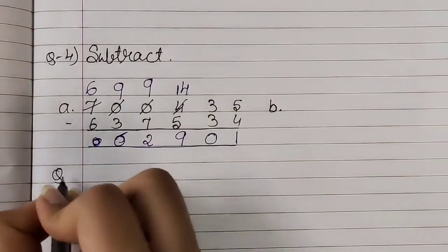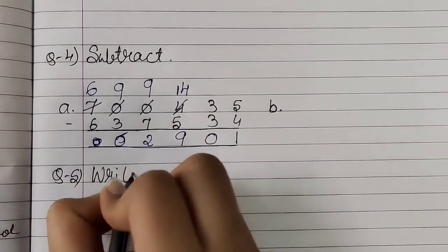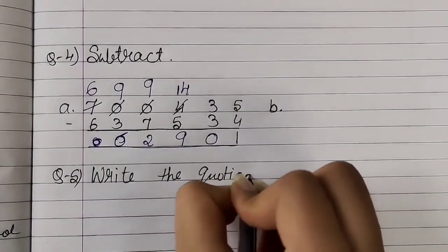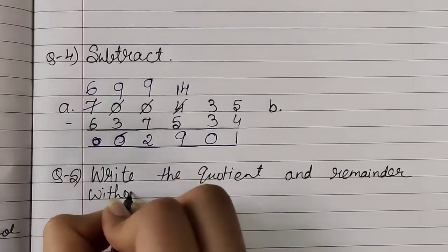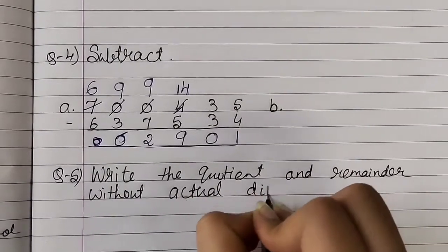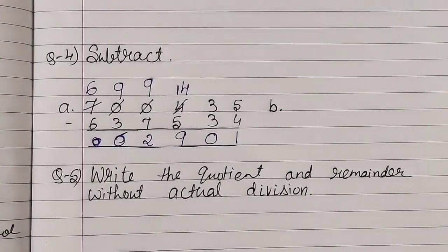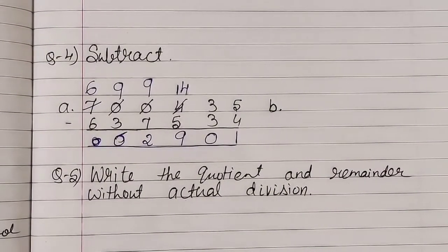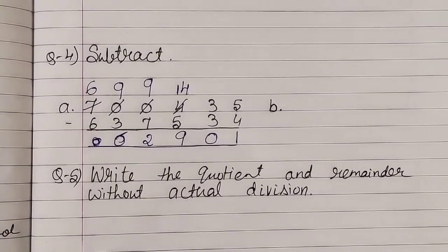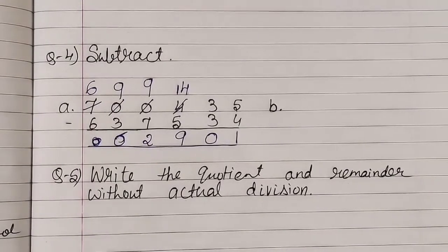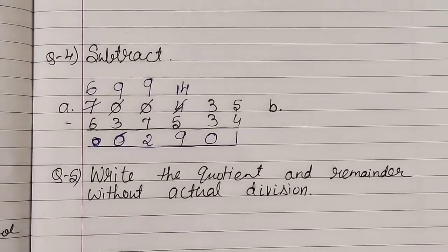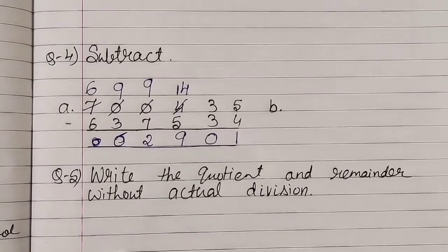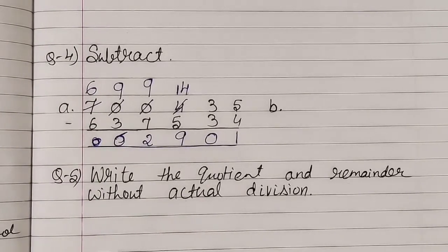Moving to question number 5: Write the quotient and remainder without actual division. Students, do you know what quotient and remainder are? Quotient is the answer we get after division. Remainder is the number that is left after dividing — the number which cannot be divided further. The number left after dividing is the remainder, and the answer we get is the quotient.